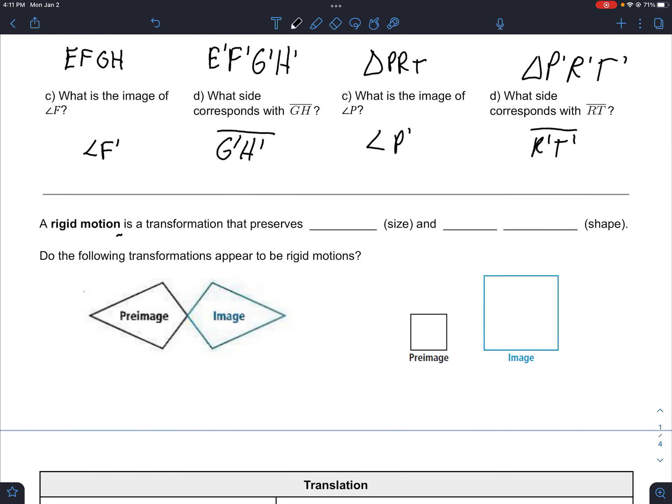A rigid motion is what we're focusing on for the first part of transformations. A rigid motion is rigid, meaning that the shape before and after did not change size or shape. So it preserves the lengths and the shape, and shape is really angle measures.